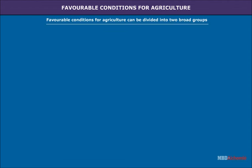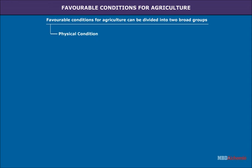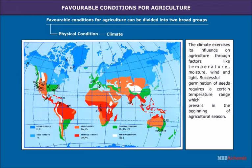Favorable conditions for agriculture. From the map of distribution of arable land, it will be observed that cultivation of crops is possible only in a limited area. It is therefore important to examine the factors which influence agricultural activity in the world. Many favorable conditions are necessary for the development of agriculture even today. These conditions can be divided into two broad groups: physical and human. The three chief physical conditions influencing agriculture are climate, which exercises its influence through factors like temperature, moisture, wind and light.